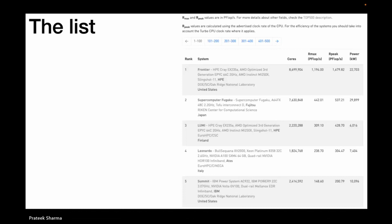The last metric that has become extremely important is power consumption. Frontier has 22 megawatt power consumption — that's huge. In fact, Frontier is one of the more energy-efficient systems out there. The second system is the Japanese supercomputer Fugaku. Frontier is an HPE Cray EX235A with AMD third-generation EPYC processors running at 2 GHz — it uses AMD accelerators.